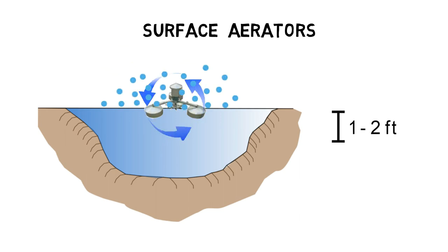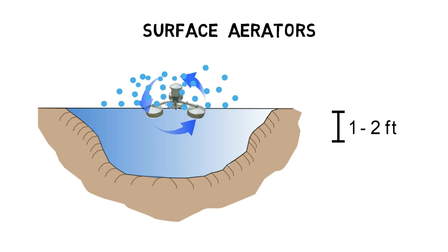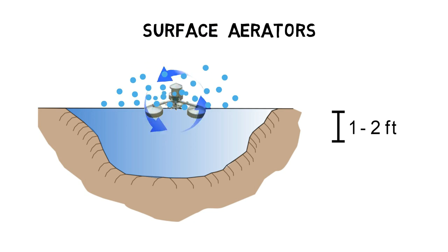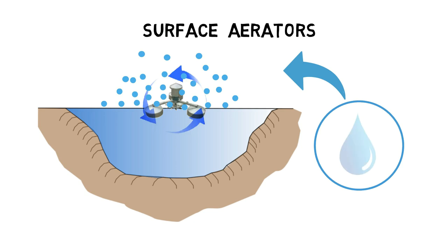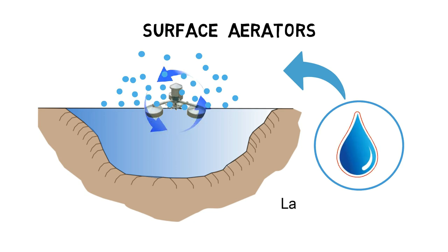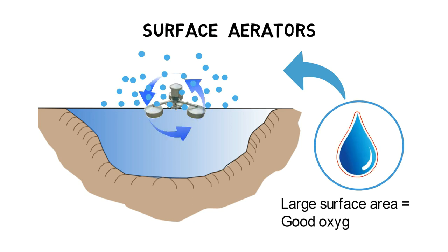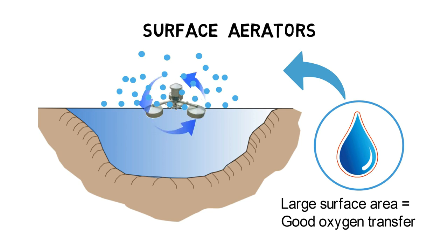By disrupting the water surface, small water droplets are created and propelled into the air. As small water droplets have a large surface area, the oxygen transfer is better compared to oxygen transfer on the water body surface.